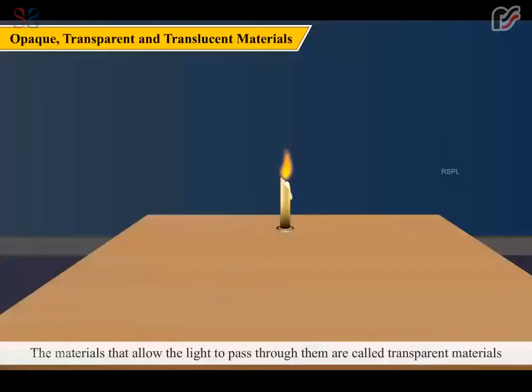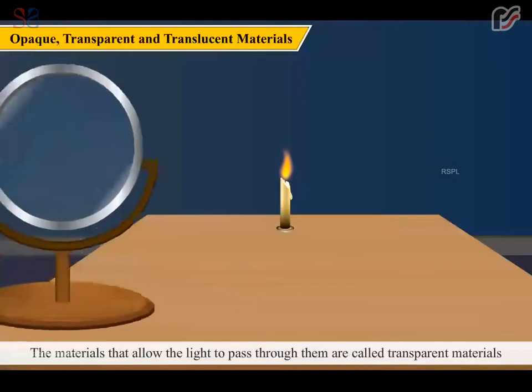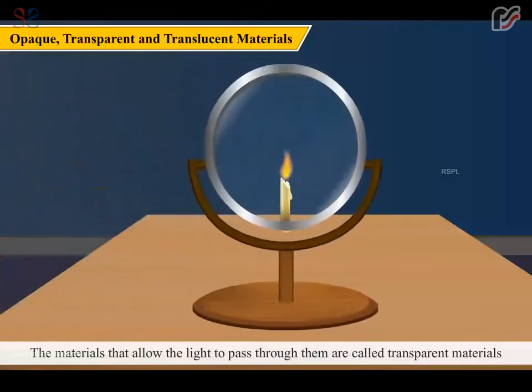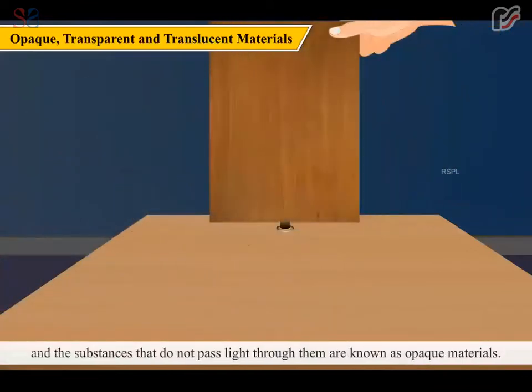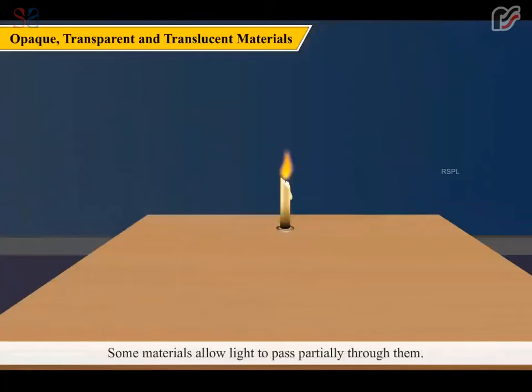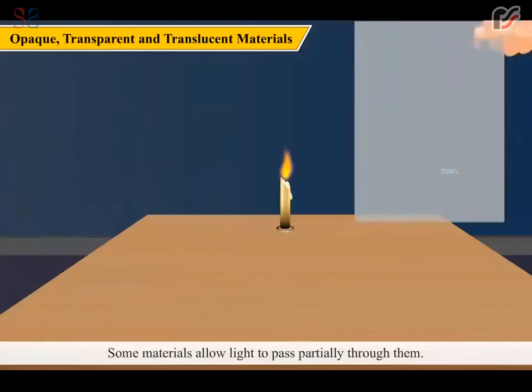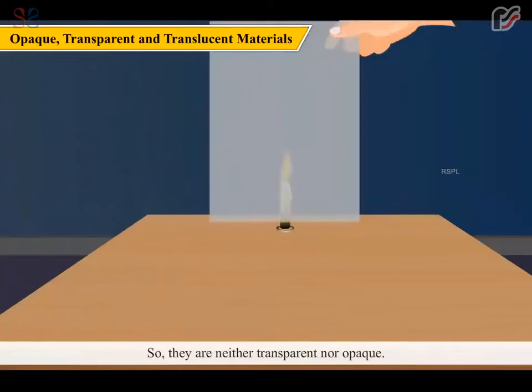The materials that allow the light to pass through them are called transparent materials and the substances that do not pass light through them are known as opaque materials. Some materials allow light to pass partially through them, so they are neither transparent nor opaque. They are known as translucent materials.